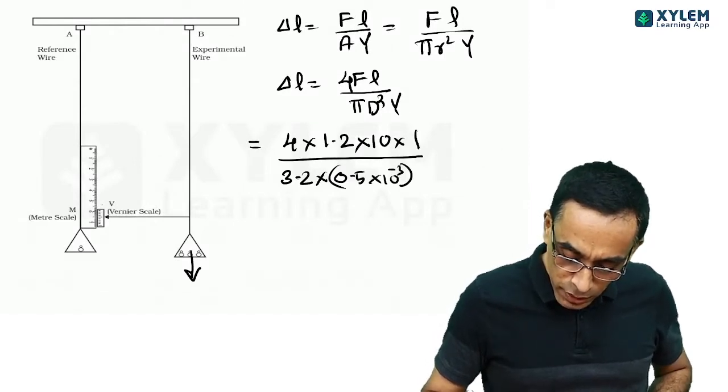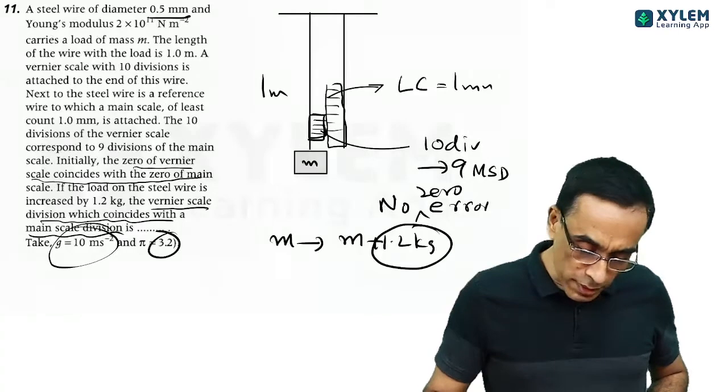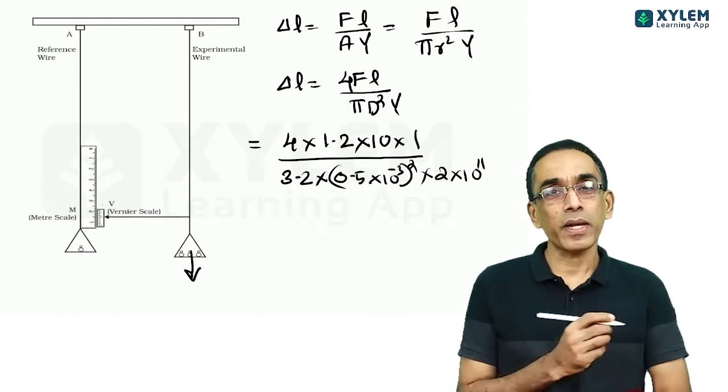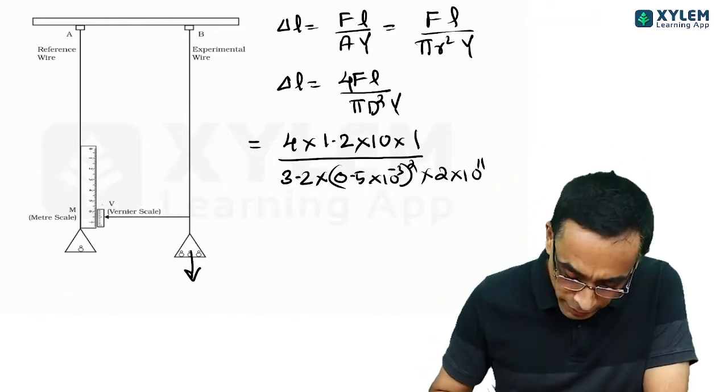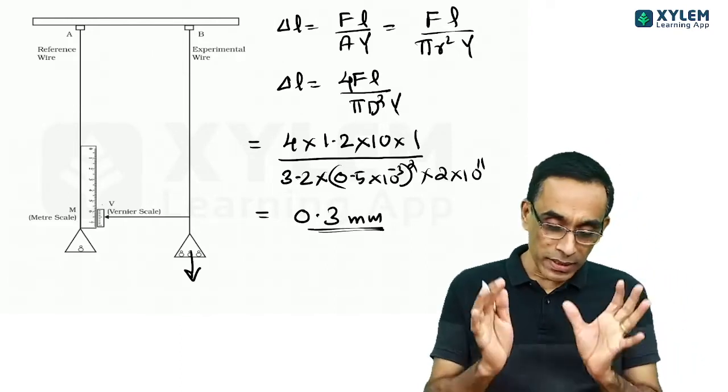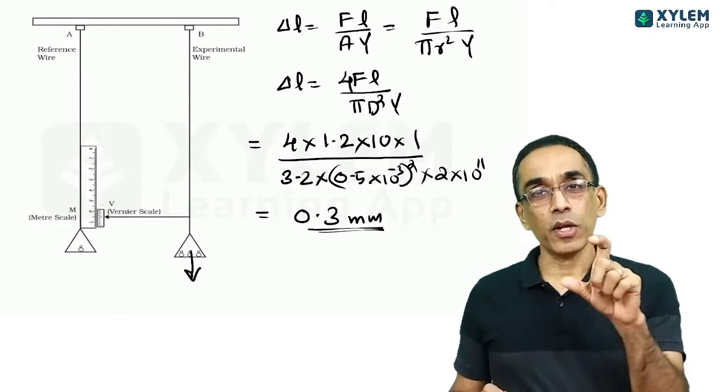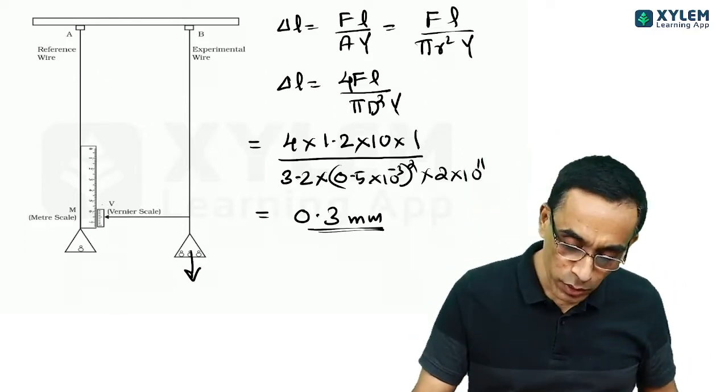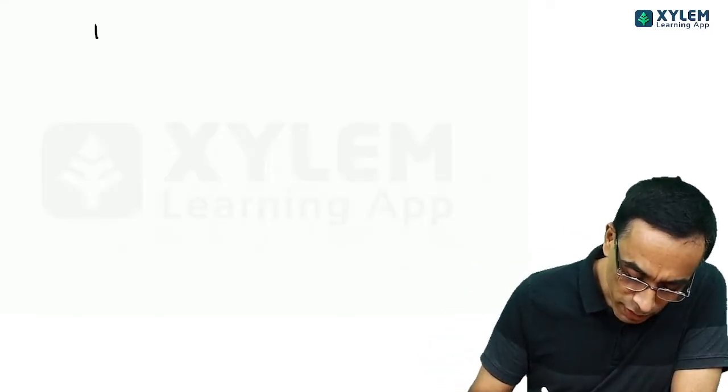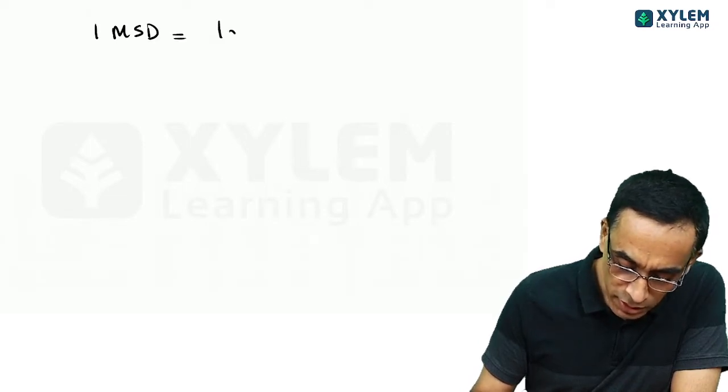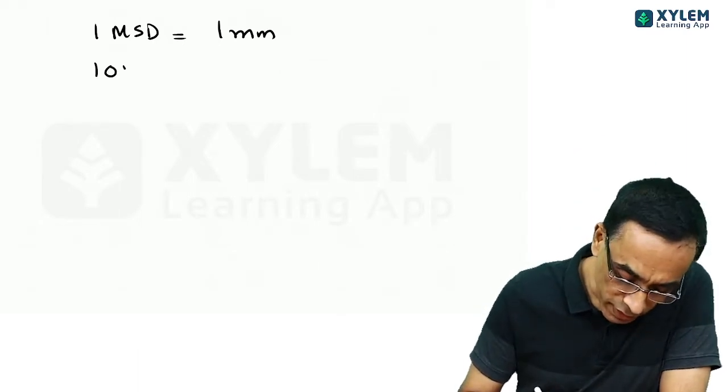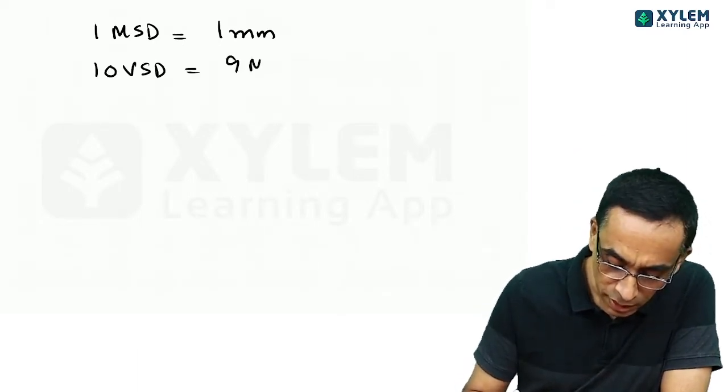What is F here? F is actually the weight of the body. The extra mass is 1.2 kg, so 1.2 into 10 into length is 1 meter divided by pi given as 3.2, 0.5 into 10 raised to minus 3 square into Young's modulus 2 into 10 raised to 11. This calculation will take some time, but you can calculate it and you will get this value 0.3 millimeter.